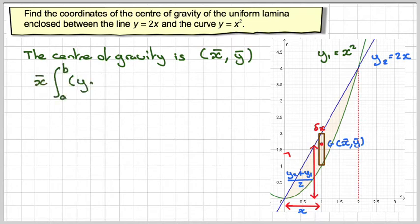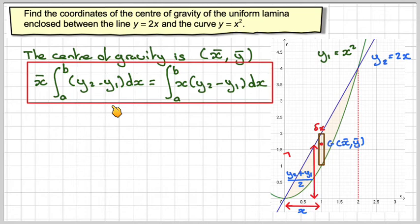So for the x-bar, it's going to be the integral from a to b of y2 minus y1 dx equals the integral of x times y2 minus y1 dx.